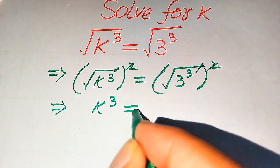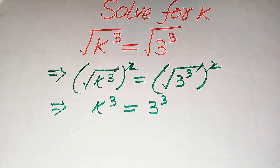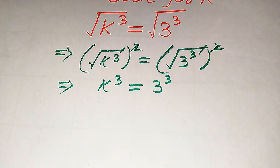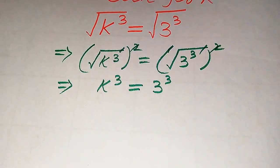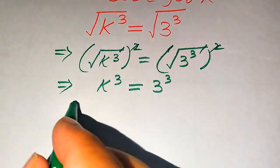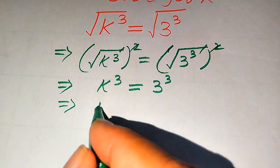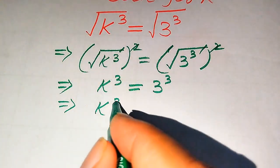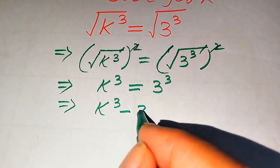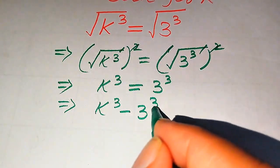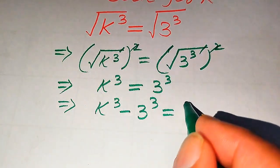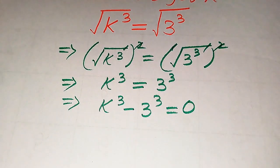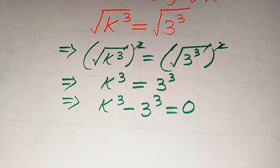We get k cubed equals 3 cubed. To solve for the values of k, we move 3 cubed from the right-hand side to the left-hand side, and it becomes k cubed minus 3 cubed equals 0. Here we use the cubic difference formula.